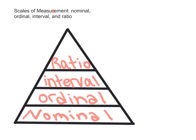The next one is ordinal scale, and this consists of a set of categories that are organized in an ordered sequence. Measurements on ordinal scale rank observations in terms of size or magnitude.